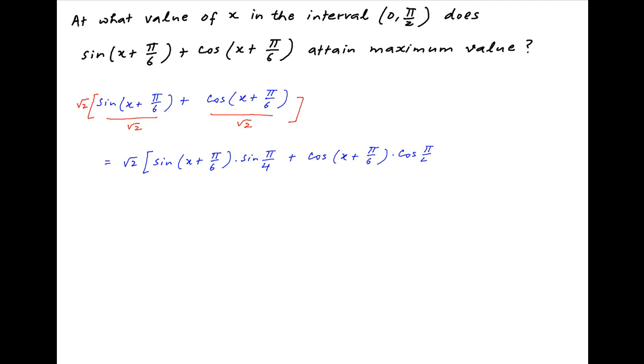Now recall that cos of a minus b is equal to cos a cos b plus sin a sin b. Using that result the expression inside the brackets can be written as cos of x plus pi upon 6 minus pi upon 4.